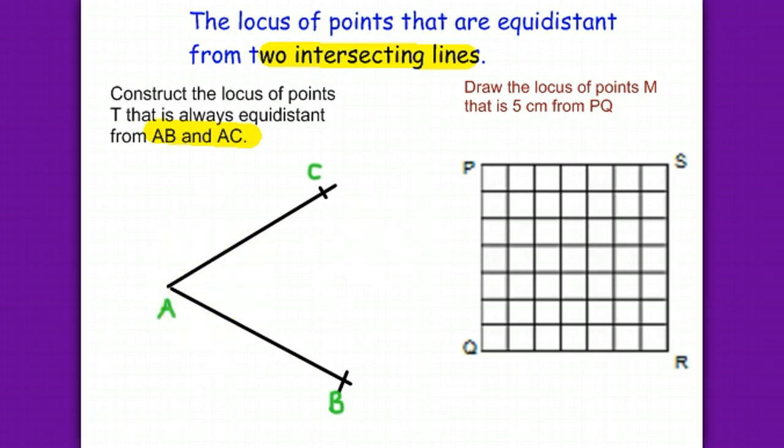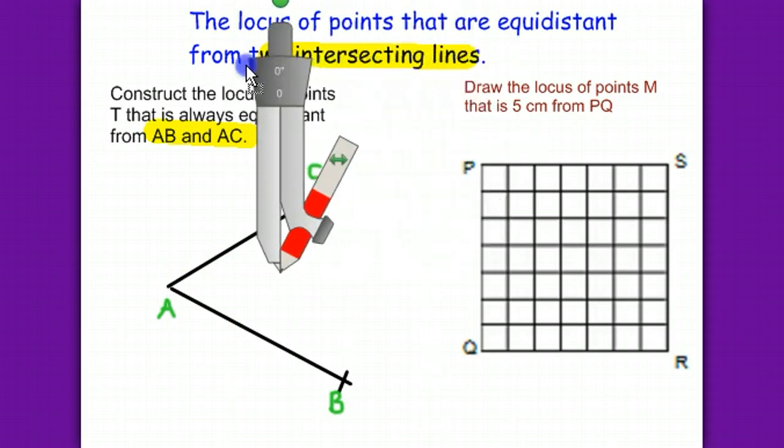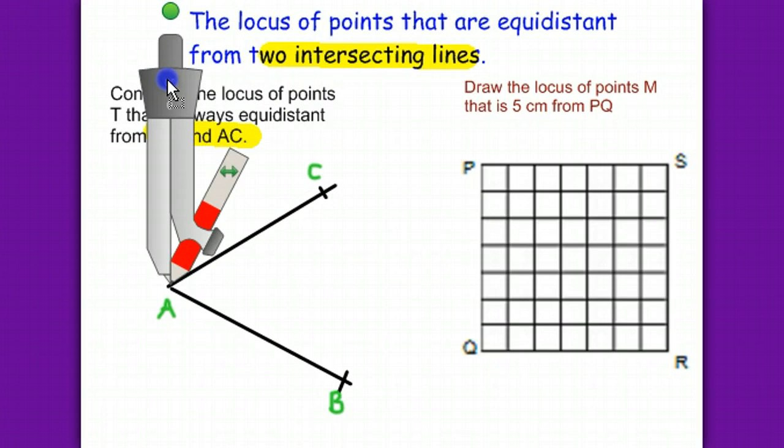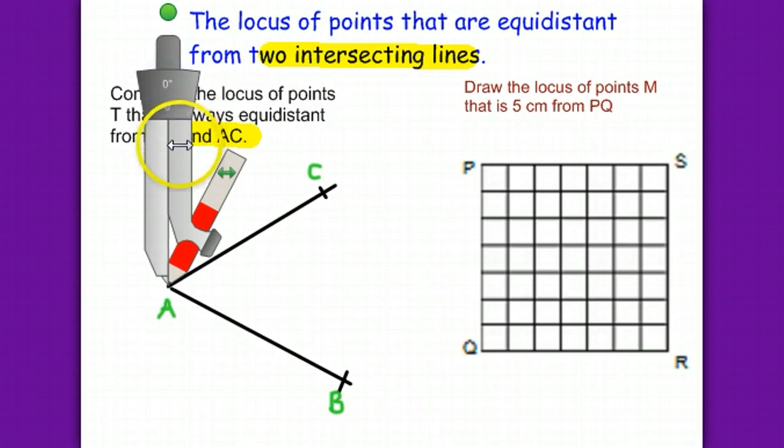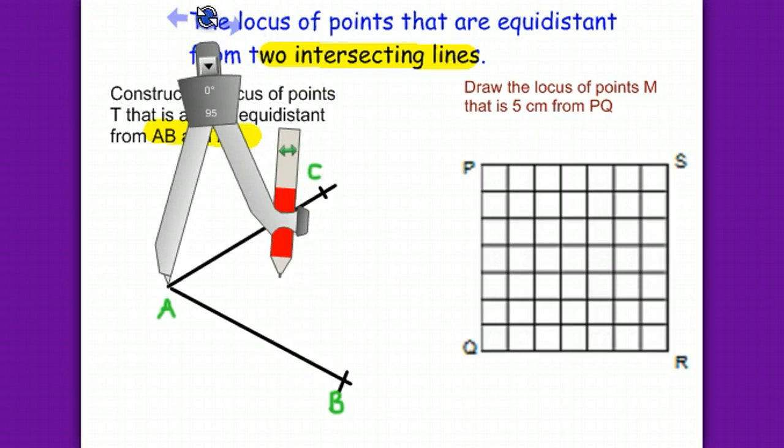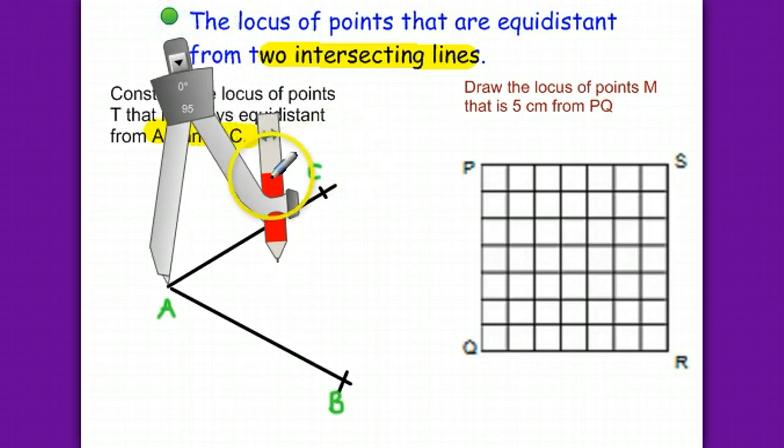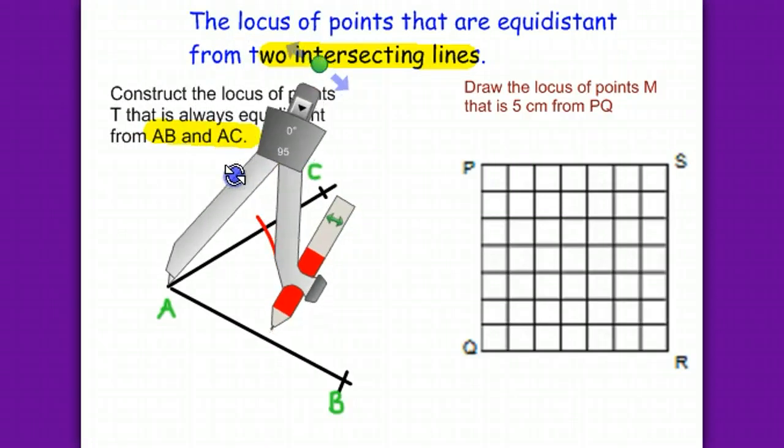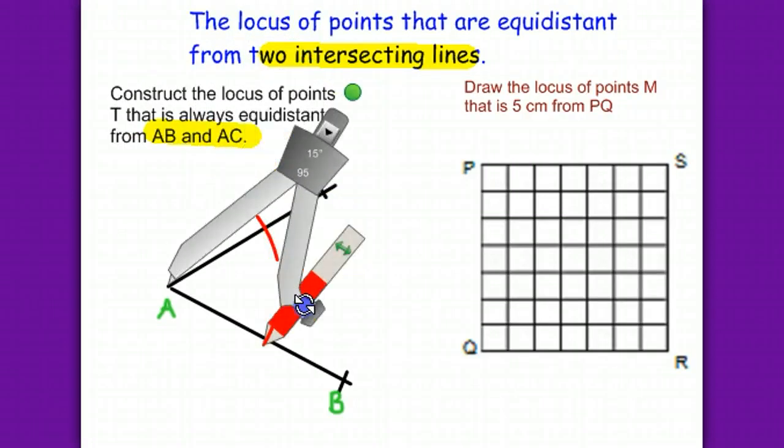We need a compass for that. Put the compass at A, open it, and make our first curve on AC. And another one on AB.